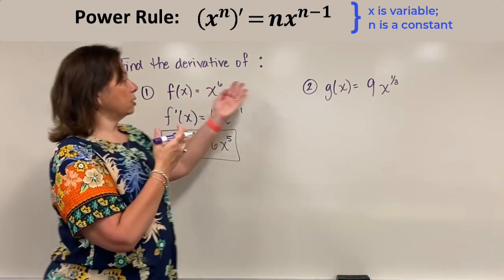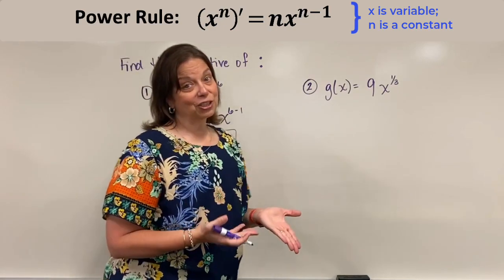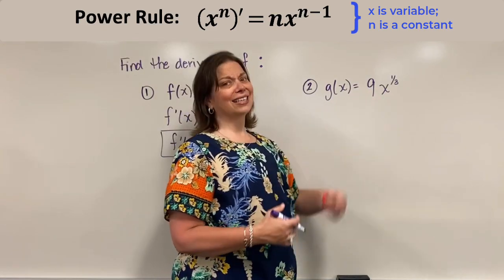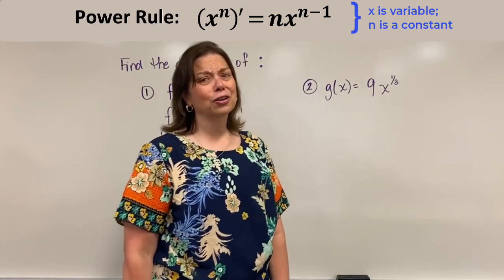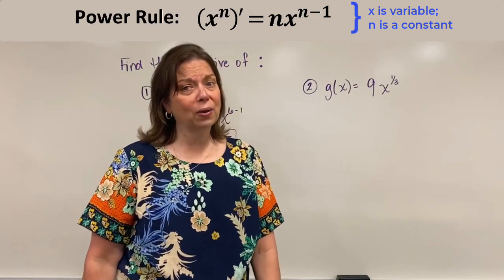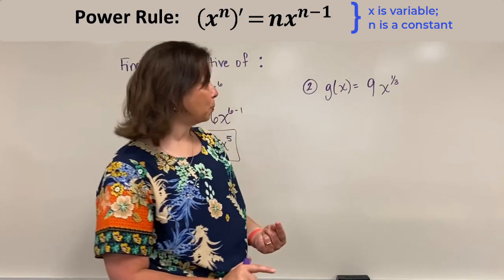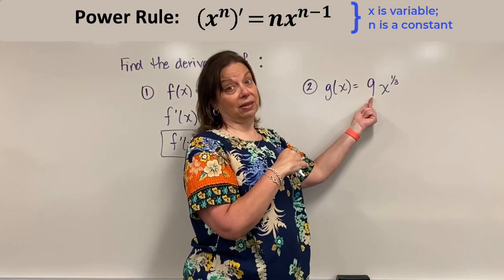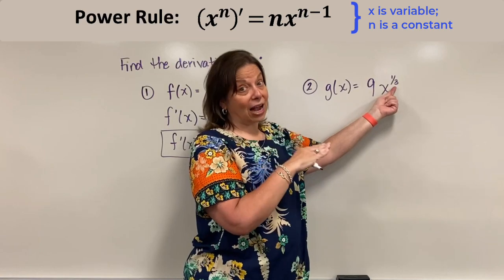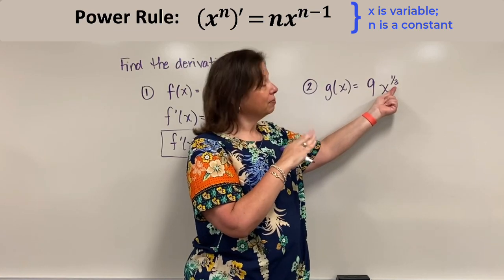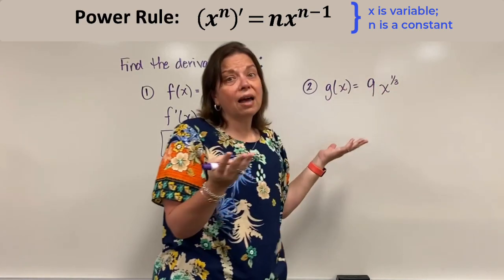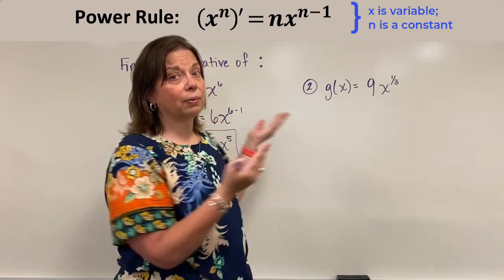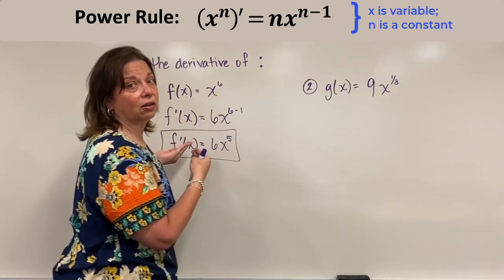Let's look at the second example here with g of x. I have g of x equals 9 times x to the 1 third power. So there are two extra things going on here in this problem. One is that I already have an exponent, but it's a fractional power. Number two, I already have a coefficient out in front. How do we handle that?